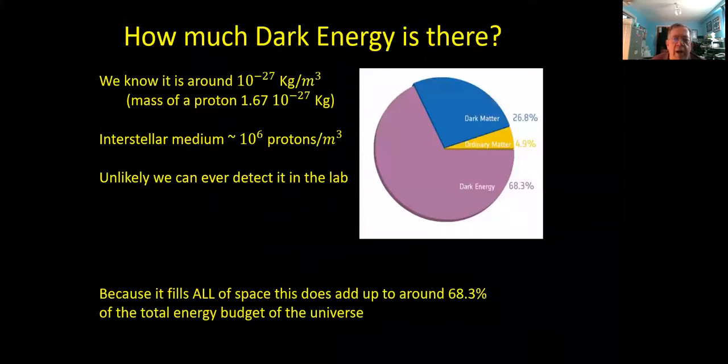So how much dark energy is there? I said it was 68% of the total energy budget of the universe. Well we know from the measurements of the expansion that it's about the equivalent, if you talk about it in terms of mass you can convert energy to mass via E equals MC squared, that famous equation. And roughly it's the same as having 10 to the minus 27 kilograms per cubic meter. And the mass of a proton is about 1.67 times 10 to the minus 27 kilograms, so it's about the same as having one proton in every cubic meter of the universe.